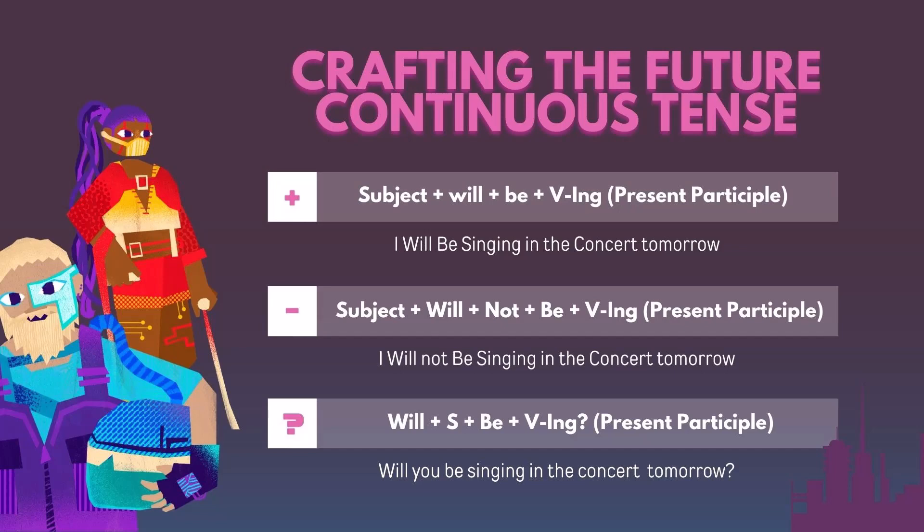Negative Sentences: Subject + will + not + be + V-ing (present participle). Example: 'I will not be singing in the concert tomorrow.'